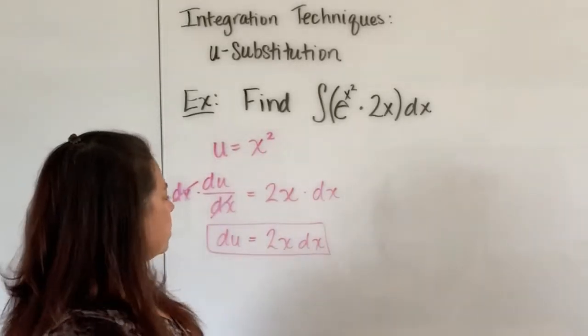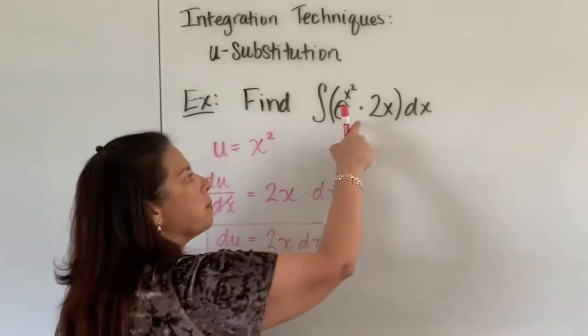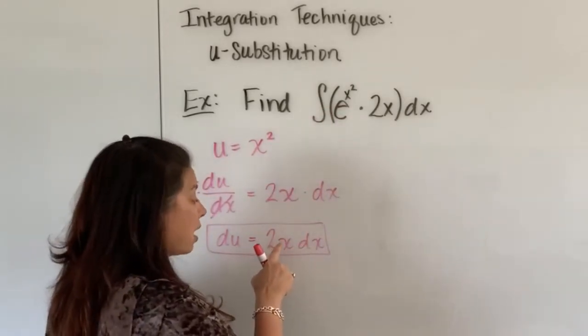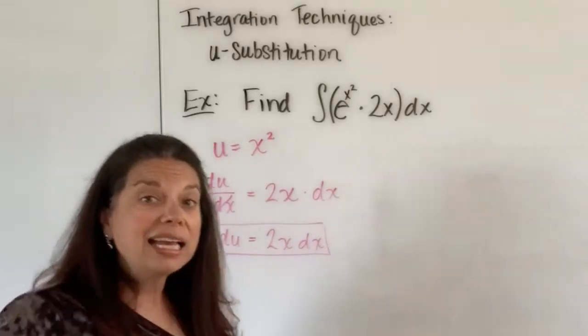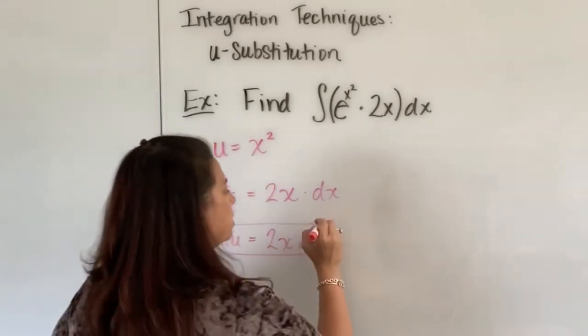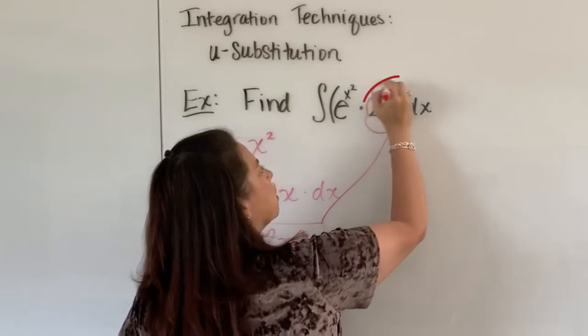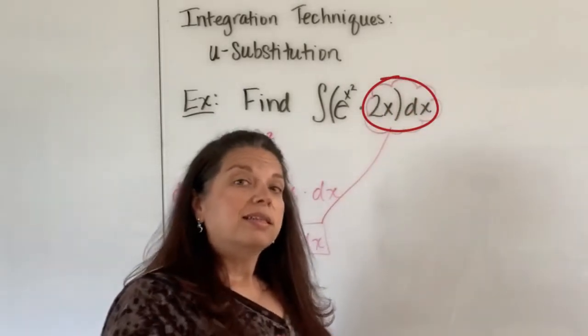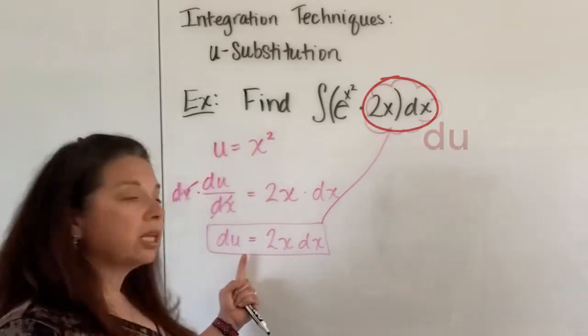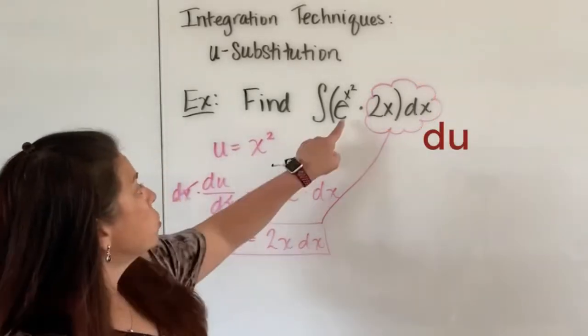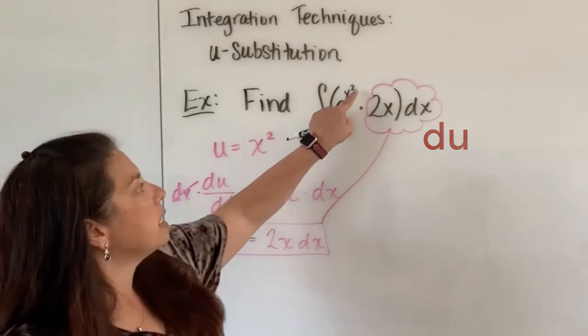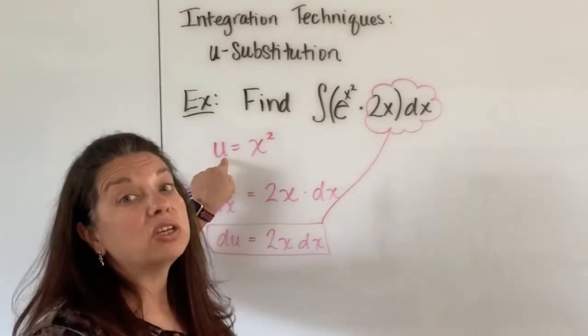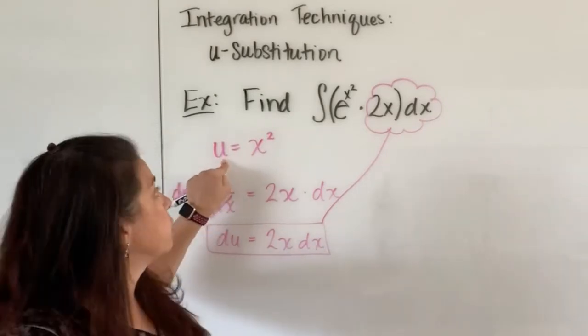What this says is that it allows us to go back up to the main problem, and everywhere I see a 2 times x times dx, I can exchange that out for the du. So I see I have over here exactly that expression, a 2x dx hanging out there, and I'm going to exchange that out for a du. Also, while I'm doing that, I have an e to the x squared, but we know that x squared we had redefined to be a u. So we'll exchange the power out for u as well.